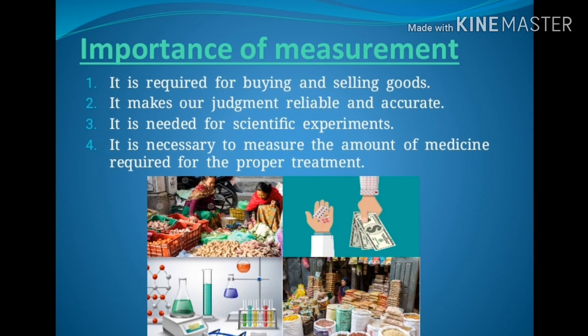Measurement is also used for scientific experiments. In scientific experiments, the substances should be in exact amounts — we can't use random amounts. So during experiments, these measurements help us to measure different quantities required for the scientific experiment.